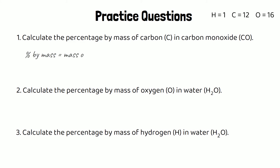For the first one, we use the same equation: percentage by mass equals the relative atomic mass of carbon over the relative formula mass of carbon monoxide, times 100. That's 12 over 28 times 100, which gives us 42.9%.